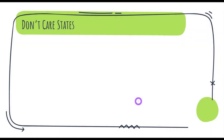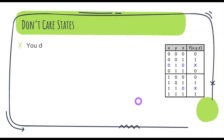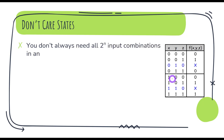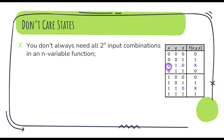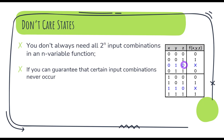In a circuit, you do not always need all the possible combinations of input combinations. So there is a possibility that a certain input combination will never occur. If it never occurs, it won't make any difference on the output, and I can exclude this particular combination altogether. If I can guarantee that this won't occur, I can ignore this input combination and call it a don't care state.